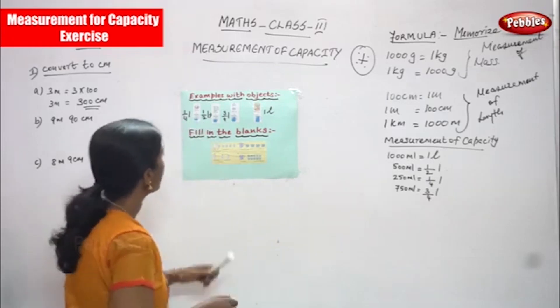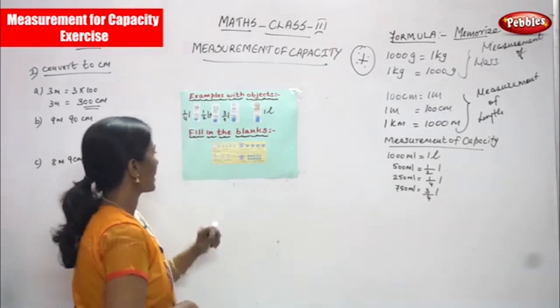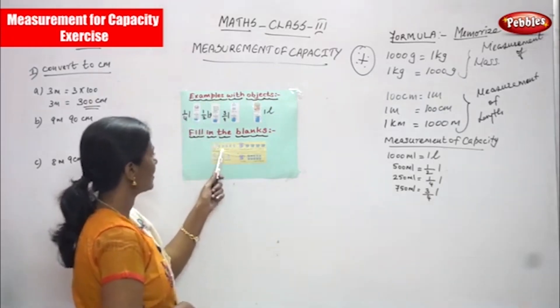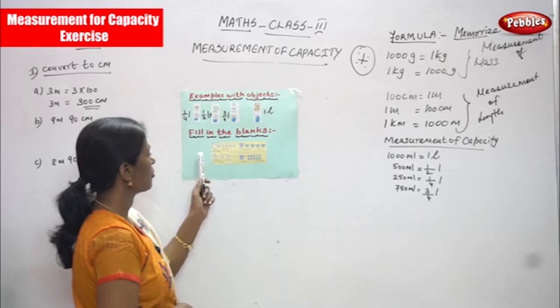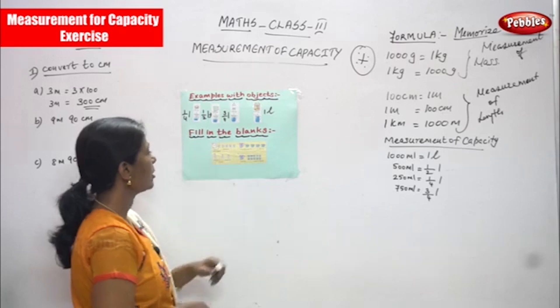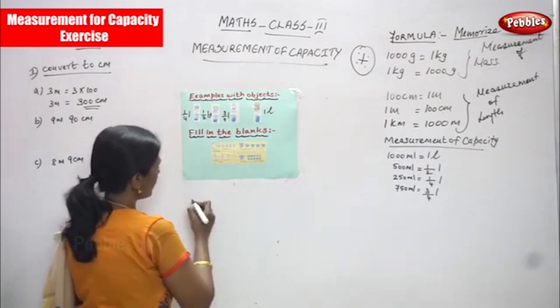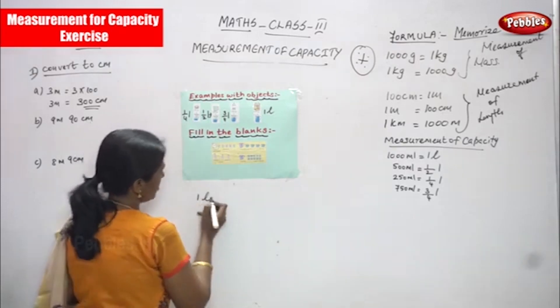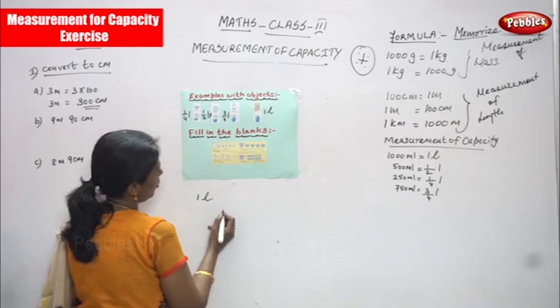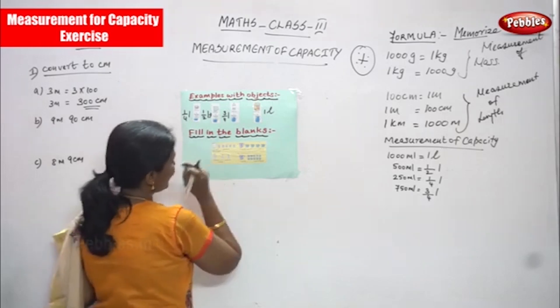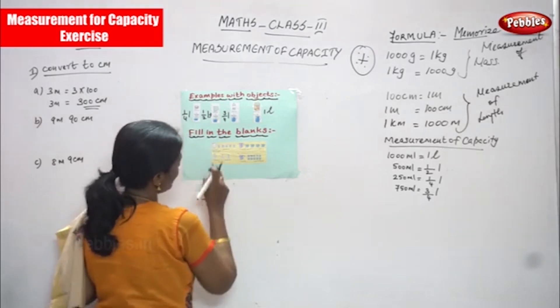Now we are going to see fill in the blanks. This is: one liter can fill dash glasses of 200 ml each. That is one liter — this is a jug, a one liter jug.